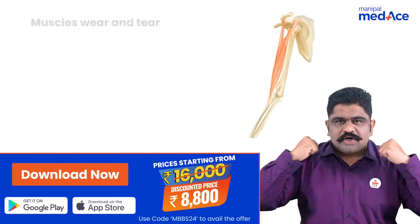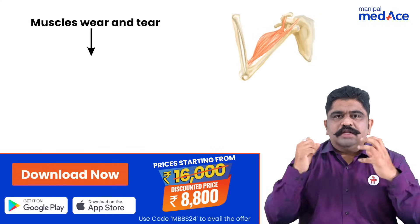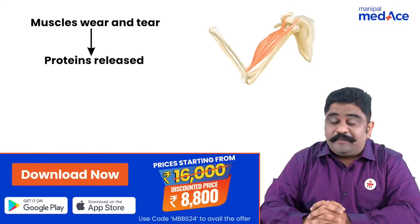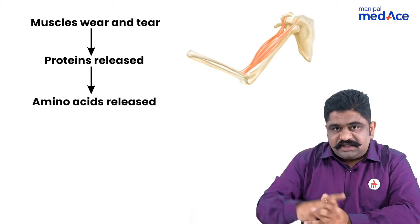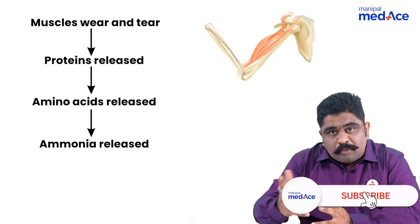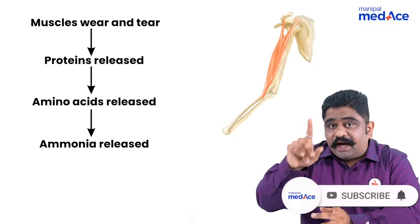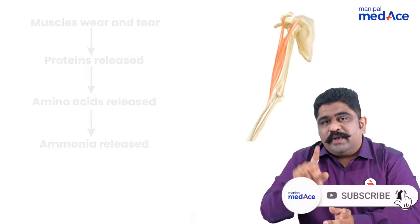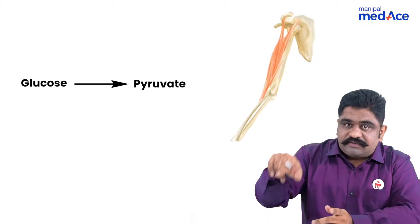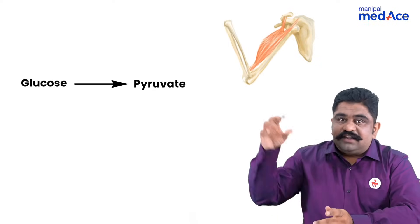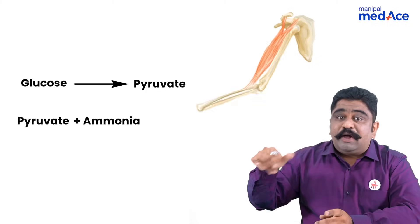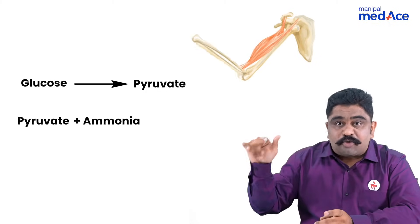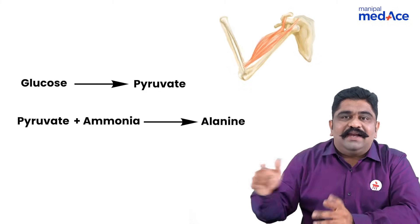Which ammonia? Whenever the muscles are flexing and contracting, the proteins may have to go for breakdown because of wear and tear. Those proteins will become amino acids, and those amino acids will liberate ammonia. Now that free ammonia can be toxic. When the muscles have produced pyruvate because of glycolysis, that pyruvate will react with the ammonia present because of the degradation of proteins in the muscles to become alanine.